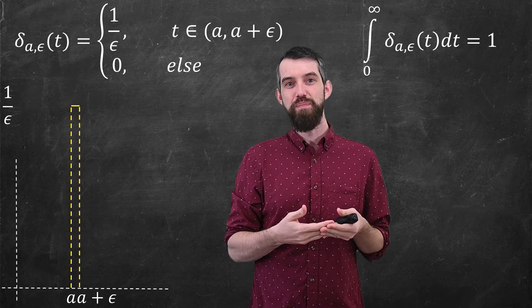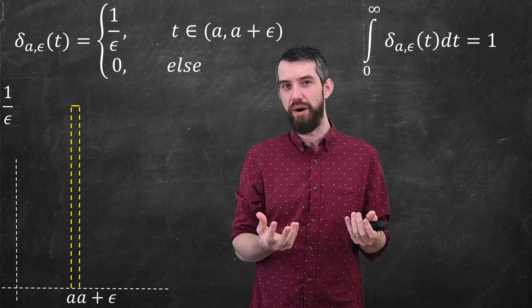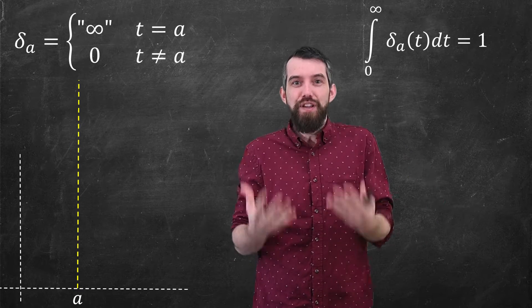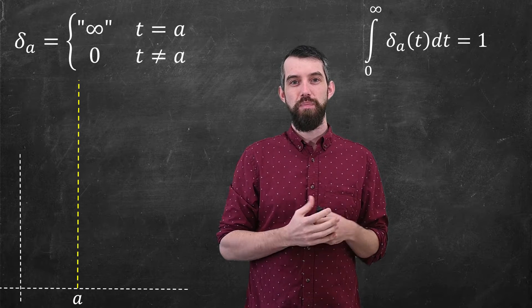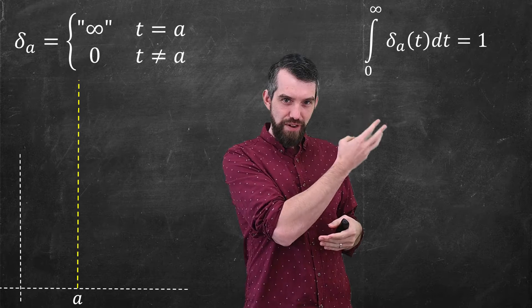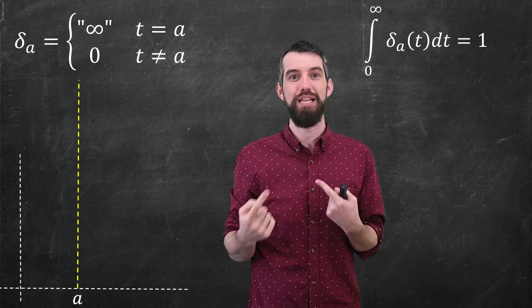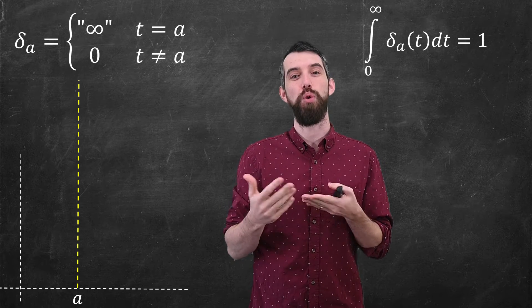And so, instead of it being zero most of the time and then just one over epsilon, which is a big number, I'm going to imagine instead that it actually goes to infinity at the value of a and is zero everywhere else. Because the integral of those delta functions when I was considering the epsilon were all one, then I'm also going to have this being true as well, that the integral from zero up to infinity of this delta sub a is equal to one.